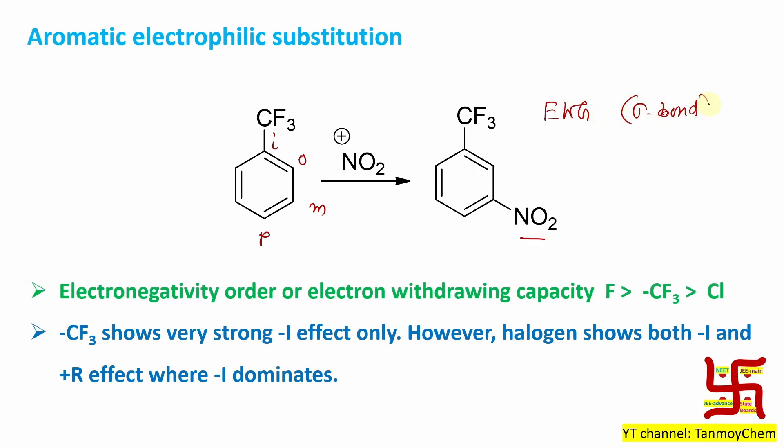It is actually a very strong sigma withdrawing molecule. If you look at the electron withdrawing capability of CF3, it is just in between fluorine and chlorine. By the way, fluorine is actually the most electronegative element.